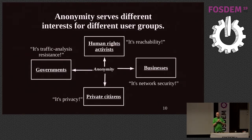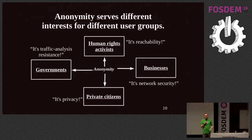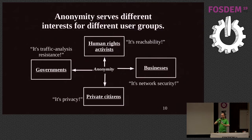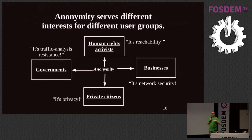There's a fourth category — the reachability side, where I want to go to BBC but I'm in Turkey or Uzbekistan and they've blocked the websites I'm trying to reach. The goal of TOR is to take all these different groups and bring them into the same network so they blend together. You can't have a privacy system only for cancer survivors, because then the fact that you're using it tells people too much about why.